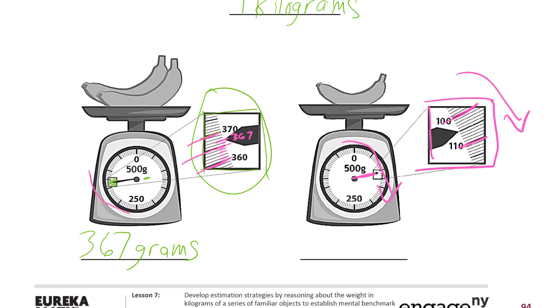On this side of the dial, the numbers get bigger as you go down. So when you zoom in like this, it's a little tricky, but we're in between 100 and 110, and we're right in the middle between 100 and 110. And that means we're at 105. So it's 105 grams.